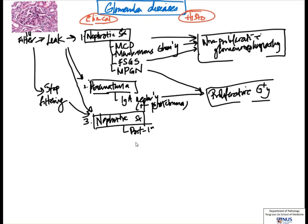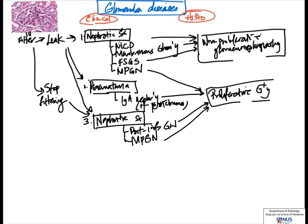It is a combination of leakiness as well as poor function of the filter. One of the most important causes is post-infectious glomerulonephritis, also known as acute proliferative glomerulonephritis — and as the name suggests, it shows a proliferative picture on histology. Another cause is membranoproliferative glomerulonephritis, and notably MPGN can cause either nephrotic or nephritic syndrome.